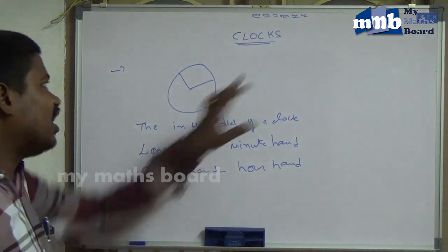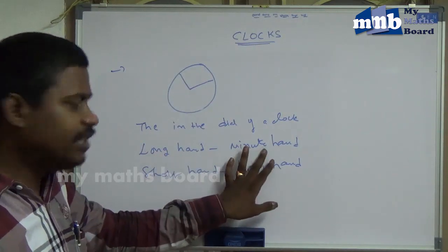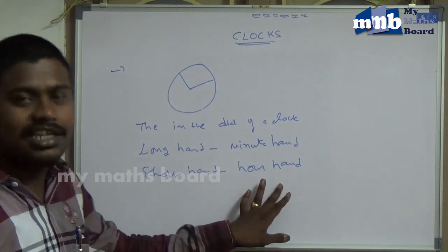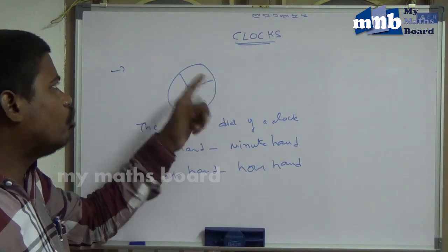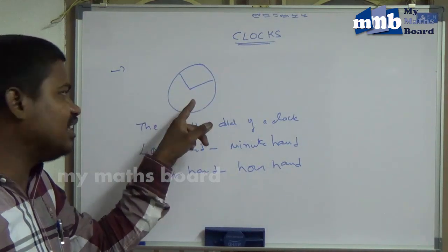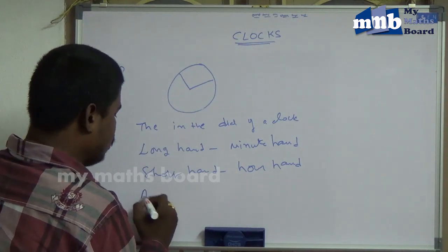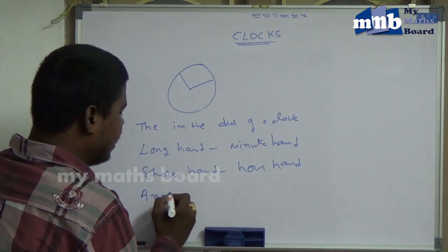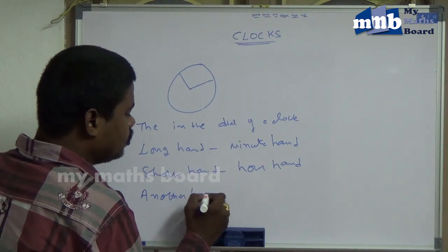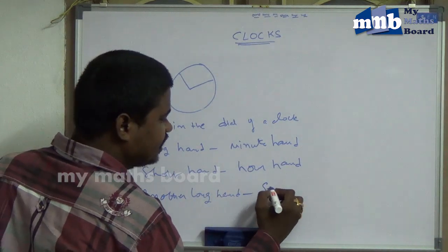Generally, in the clock, we have two hands. The long hand indicates minutes and the short hand indicates hours. In many clocks, we see another hand — that is the second hand. Another long hand indicates seconds.